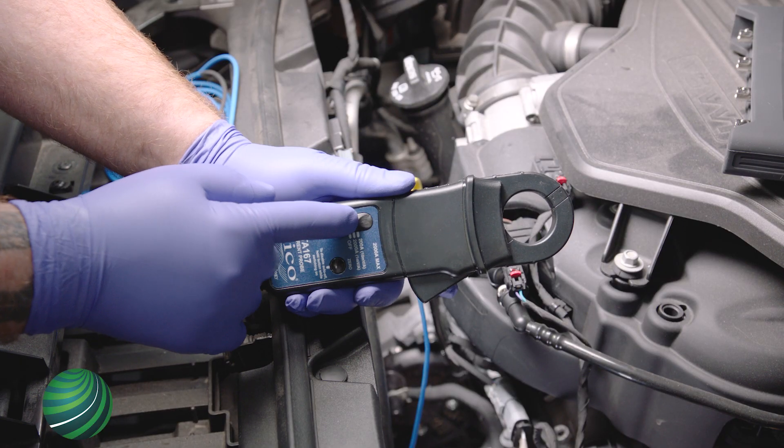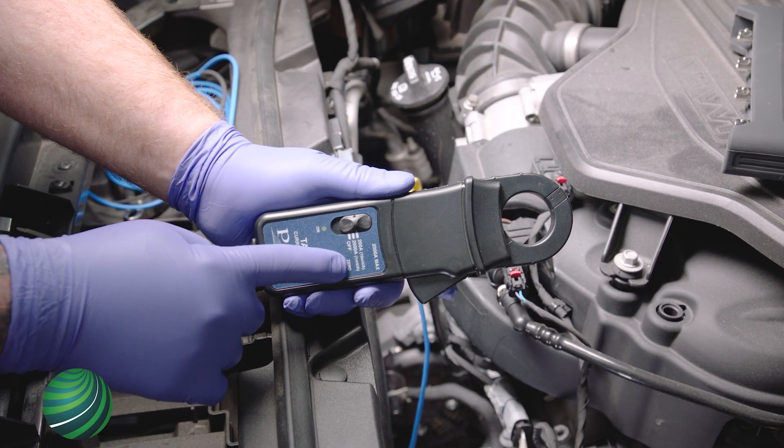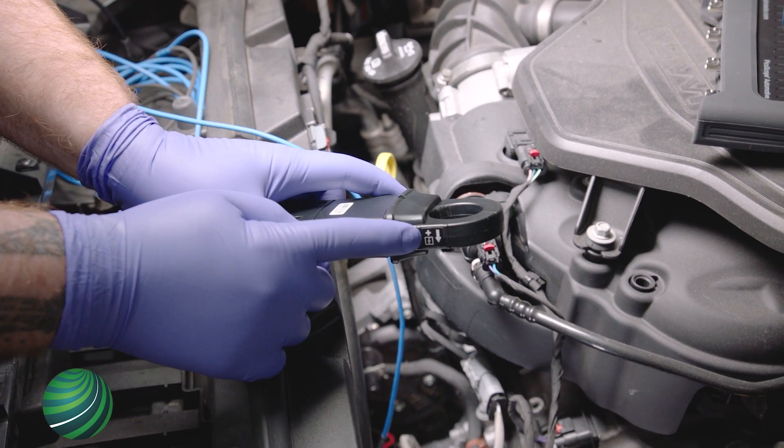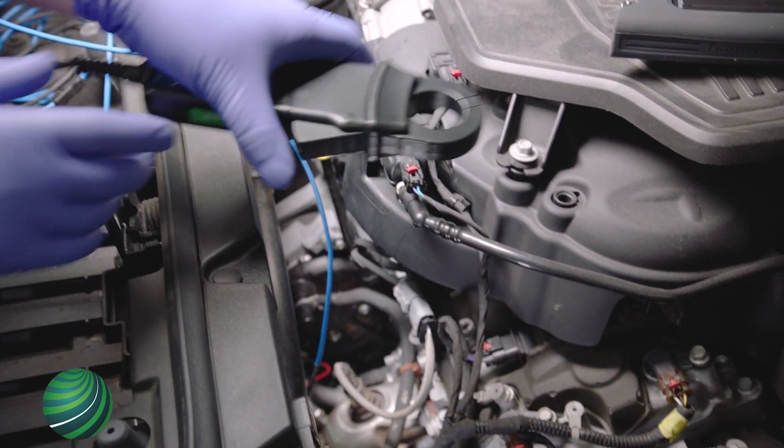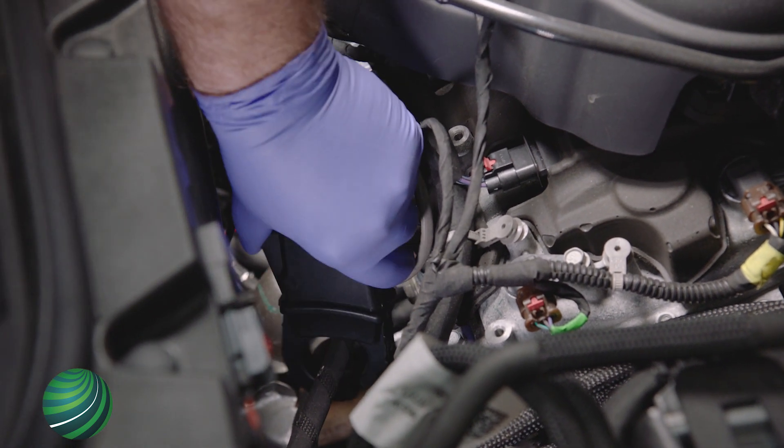Turn on the high amp probe. Set the scale and zero the probe. Confirm the direction of current flow through the probe. Next, clamp the probe on the alternator output cable.